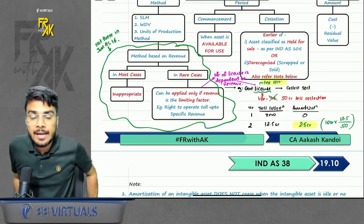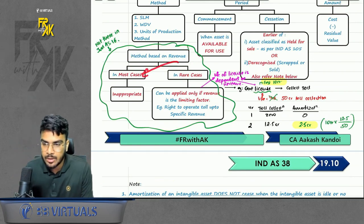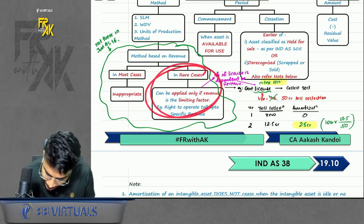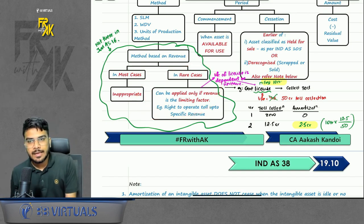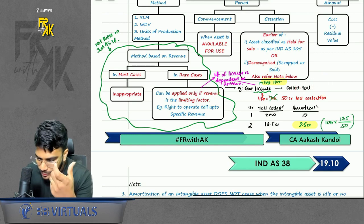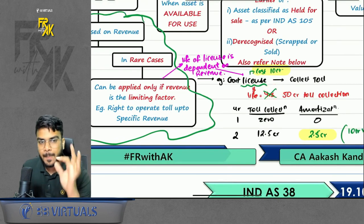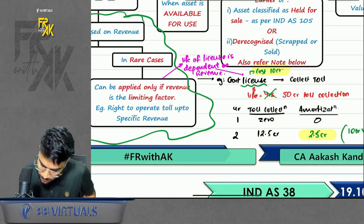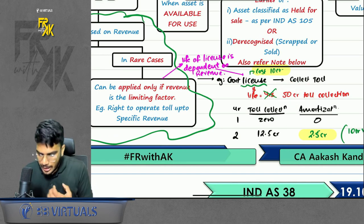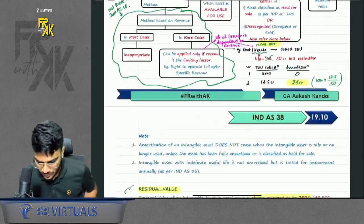One important point: normally in Ind AS 16 we discussed that depreciation or amortization based on revenue earned is not appropriate. But there is one rare case where we can amortize based on revenue — that is when the life of the asset is dependent on revenue. For example, if the government gave you a license and told you that the license does not have a specific life in terms of years, but you can collect toll up to 50 crores — the life of the toll is based on your collection, which is revenue. In this case you can amortize the license on the basis of toll collection.